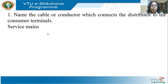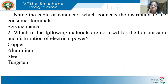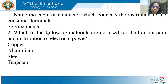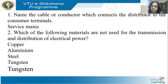Which of the following materials are not used for transmission and distribution of electrical power? Copper is used extensively — the only problem is cost. Aluminium conductors are cheaper and lighter, but aluminium conductivity is not as good as copper. We use steel-reinforced aluminium conductors. Tungsten is not used because tungsten is not a good conductor. So the answer is tungsten.